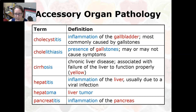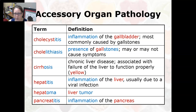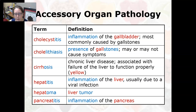Cholecystitis is inflammation of the gallbladder, most commonly caused by gallstones. Cholelithiasis is the presence of gallstones, which may or may not cause symptoms. Cirrhosis is a chronic liver disease associated with failure of the liver to function properly. The root 'cirrho' means yellow, so you'll see jaundice — yellowing of the skin — because the liver cannot process bilirubin, which backs up. Cirrhosis can have many different causes.